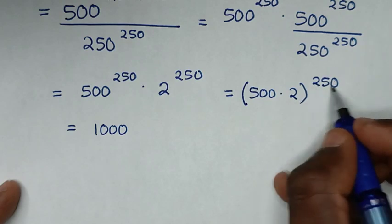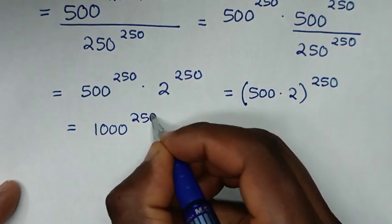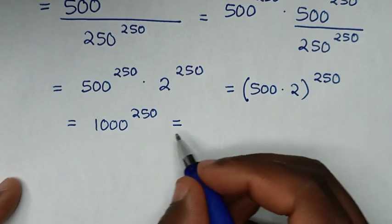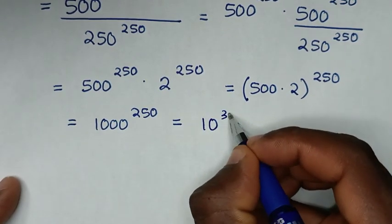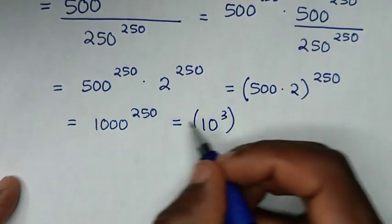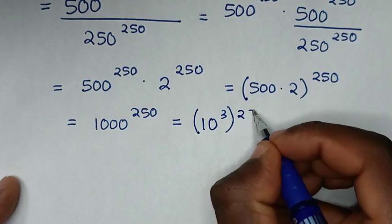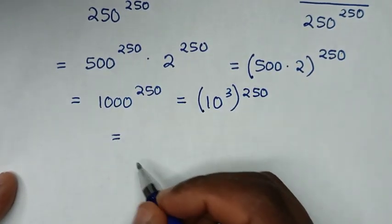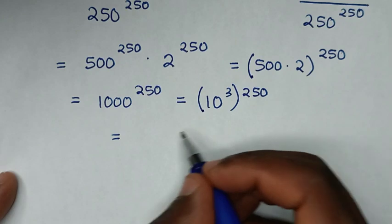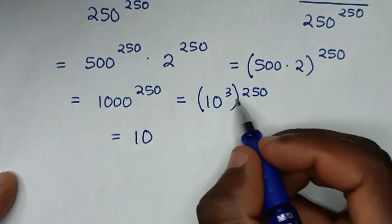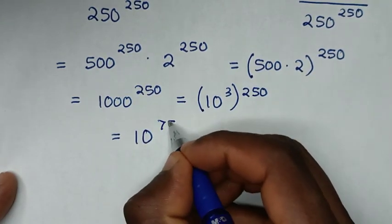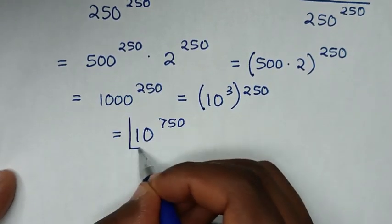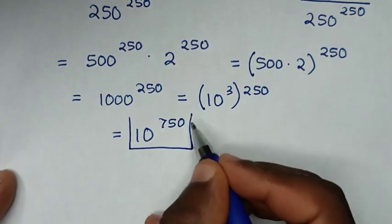1,000 is the same as 10 power of 3, then bracket, power of 250. Then it will be equal to 10 power of 3 times 250, which is 750. Therefore, 10 power of 750 is our final answer.